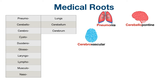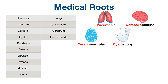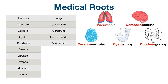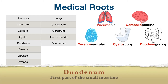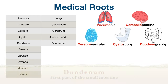The next root is cysto, which refers to the urinary bladder. You can think of cystoscopy, which is a procedure using a scope to look inside the bladder. Next, we have duodeno, which pertains to the duodenum. An example medical term is duodenography, which is radiographic visualization of the duodenum with contrast dye.